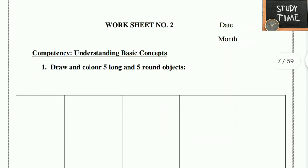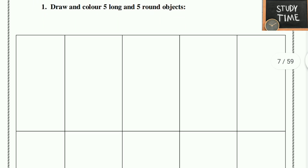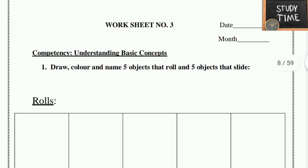Next, draw and color five long and five round objects. You can draw five long objects like a scale, pipe, pencil, pen, stick, and round objects like ball, lemon, orange, apple. You can draw like that.